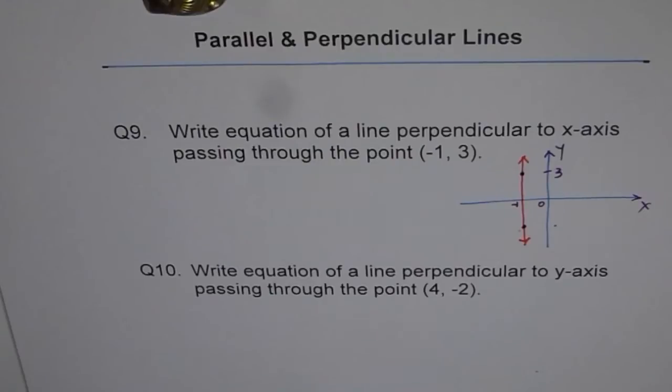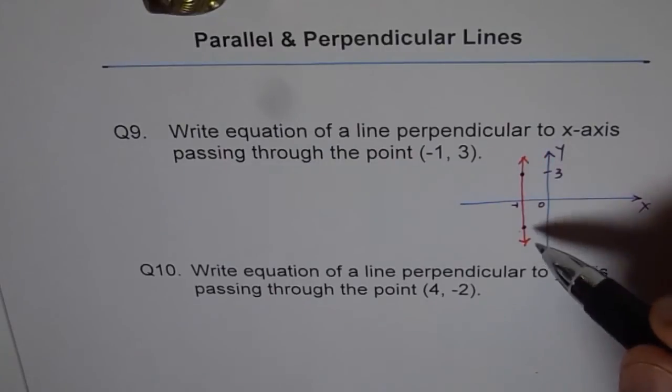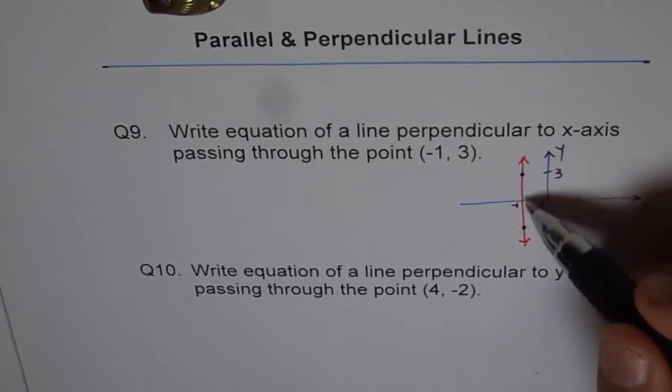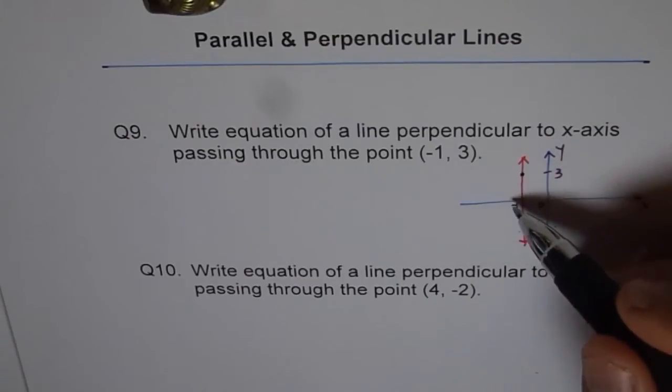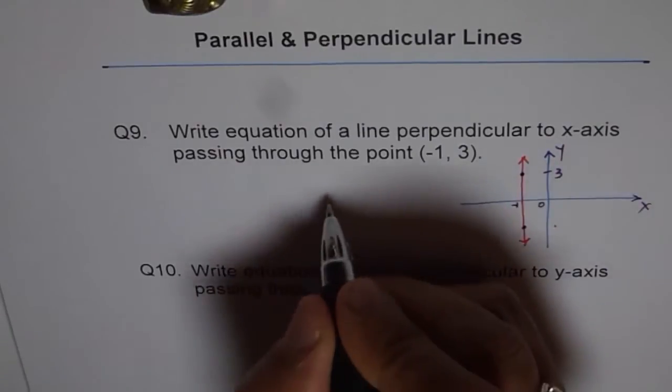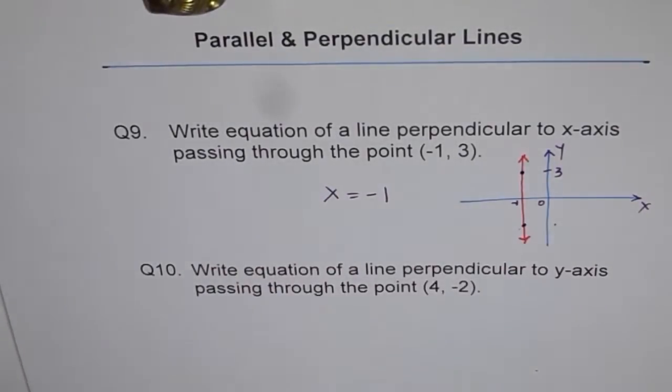Now what is the equation of this line? Write your equation. The equation of a vertical line should always be - you see, x value is always minus 1. Therefore, the equation of this line is x = -1, correct?